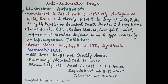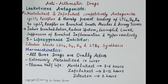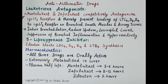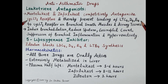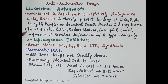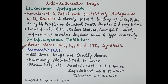Now let's discuss important characteristic features of leukotriene antagonists and 5-lipoxygenase inhibitors. Montelukast and zafirlukast competitively antagonize cysteinyl leukotriene 1 receptors, preventing binding of leukotriene C4, D4, and E4 to receptors on bronchial smooth muscles and airway tissues. These drugs induce bronchodilation, reduce sputum, reduce eosinophil count, suppress bronchial inflammation, and suppress bronchial hyper-reactivity.